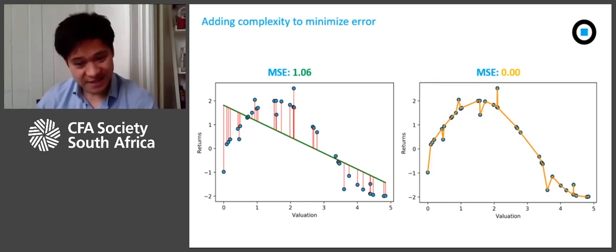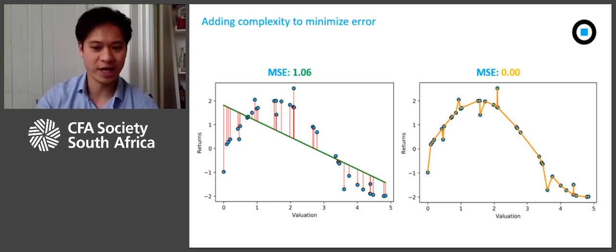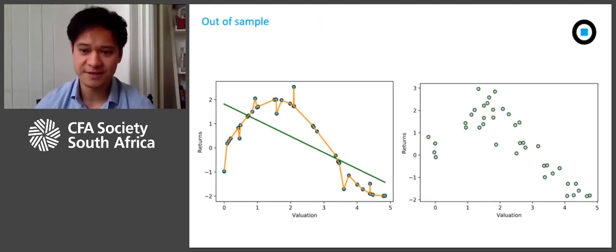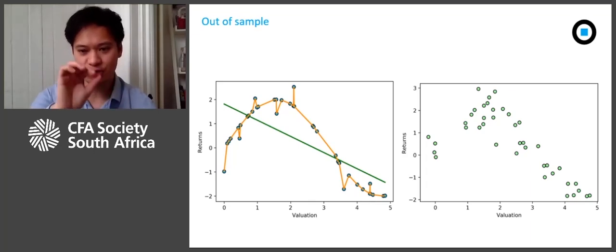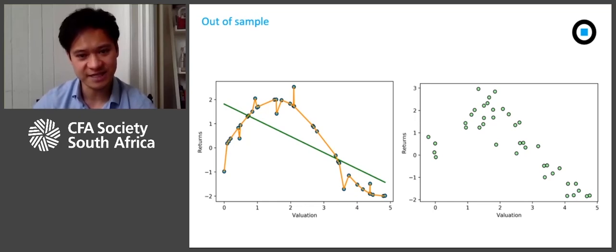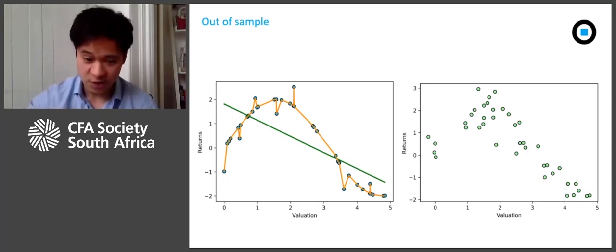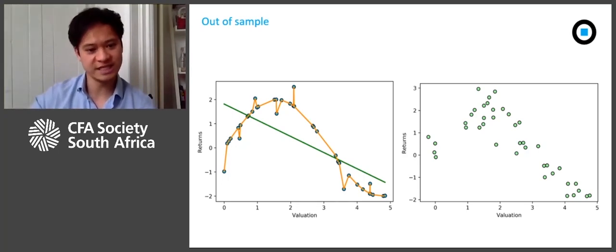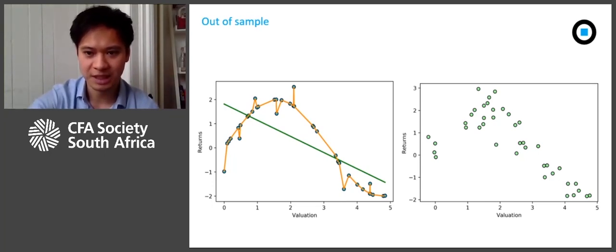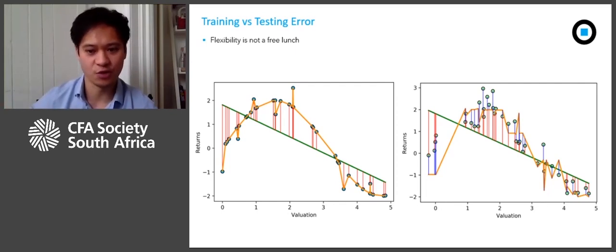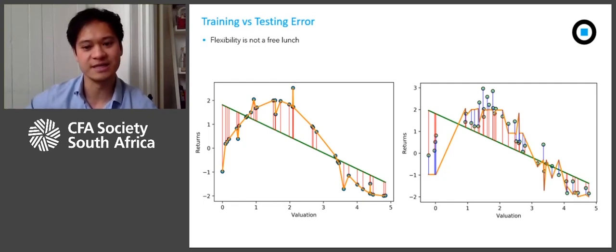Does this mean that the model on the right is better? It's worth asking whether minimizing mean squared error is the correct objective for us as investors. We take our two models — fitted to the original blue data points — and use them on a new set of data, the green points on the right. You can think of this new data as other stocks, or valuation and returns data over different time periods for the same stocks. We then measure the errors: red error bars for the linear model, and blue error bars for the complex orange model on the new data.